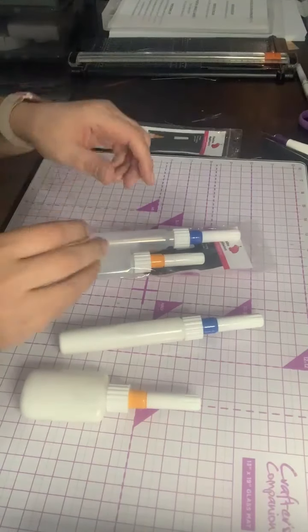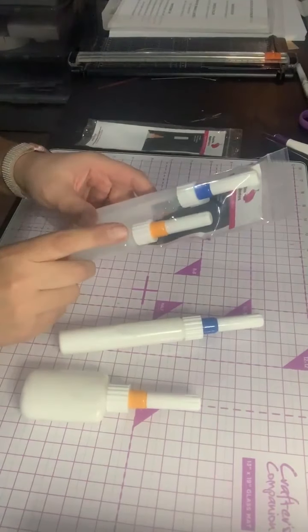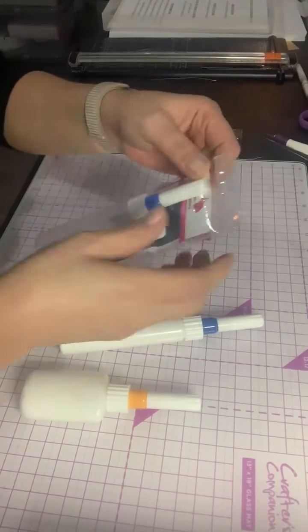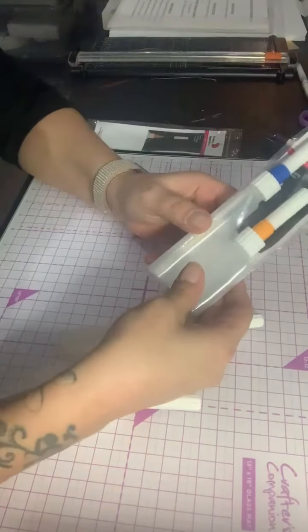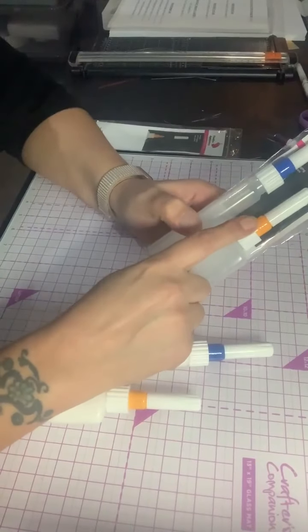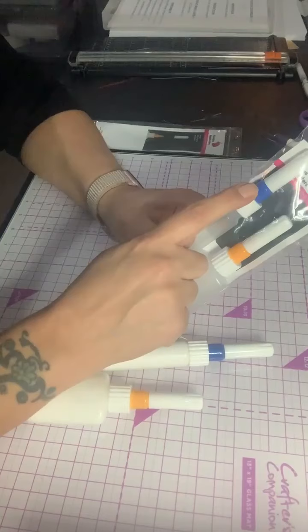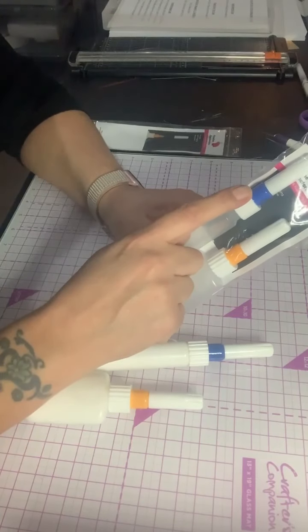Hiya, Hazel from Pinkfrog. I just wanted to talk to you about our new fine tip glue applicators. So inside the packet there's two. The one with the yellow, that's a 0.8 mil nib. The one with the blue top, that's a 0.5 mil nib.